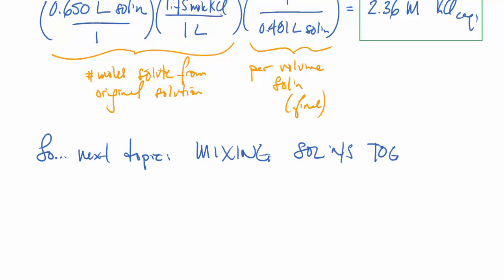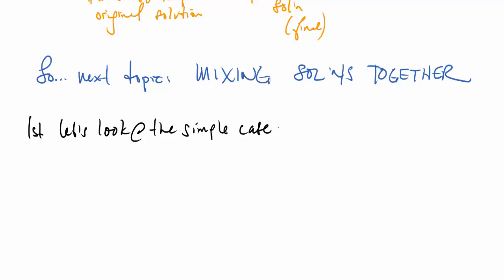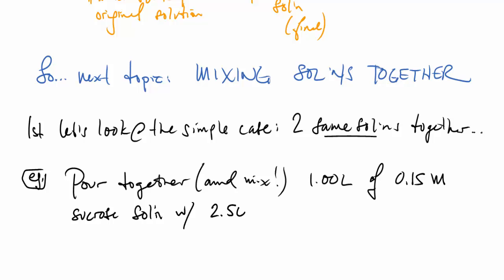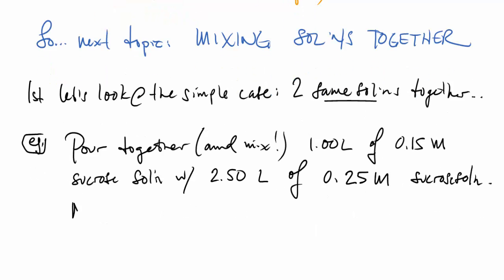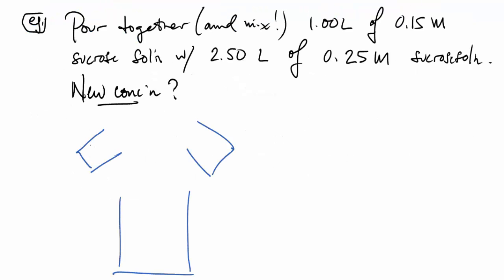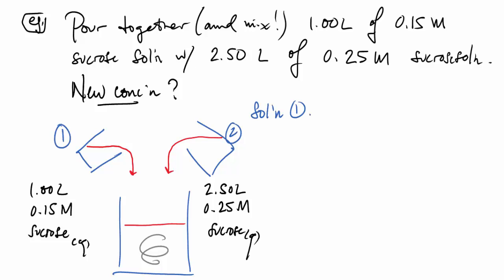Next, let's look at what happens when we mix solutions together. The simple case is mixing two solutions of the same solute. Here we pour together 1 liter of 0.15 molar sucrose solution and 2.5 liters of 0.25 molar sucrose solution, then stir them up to find the new concentration.